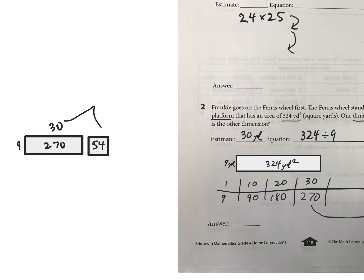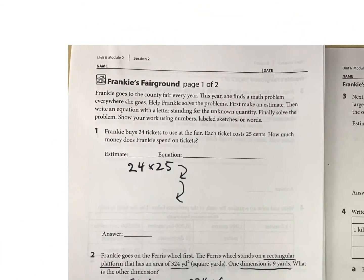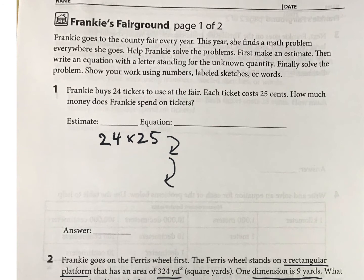And then I forgot to do this estimate back here. Let's check that real quick. If you did 25 times 20, it's going to be 500. And it's probably going to be more than that. But anyways, just make a quick estimate there.